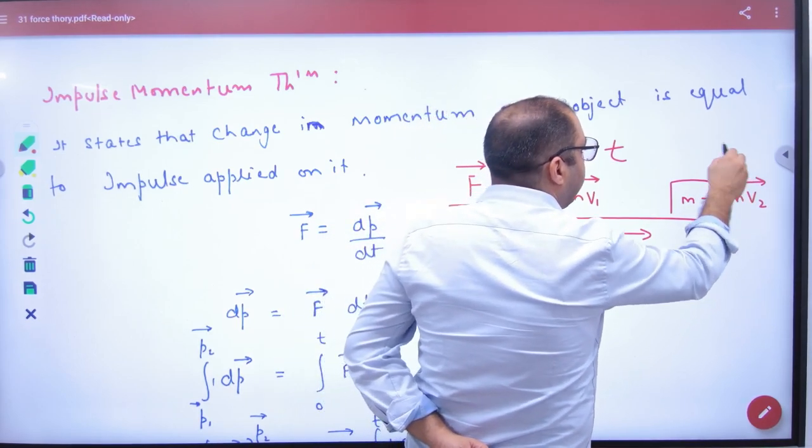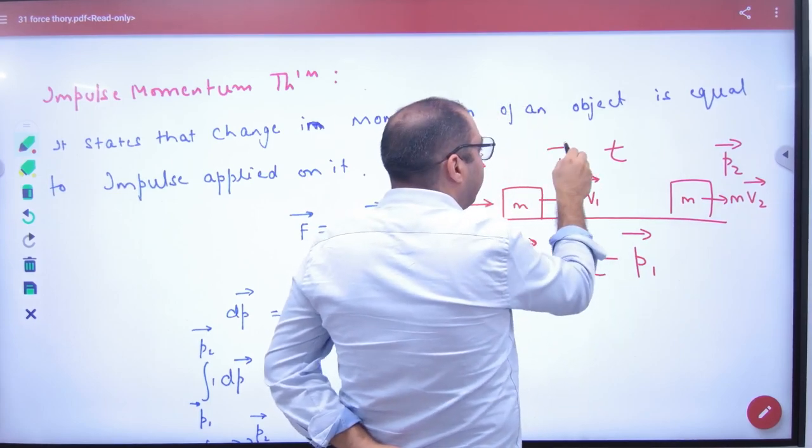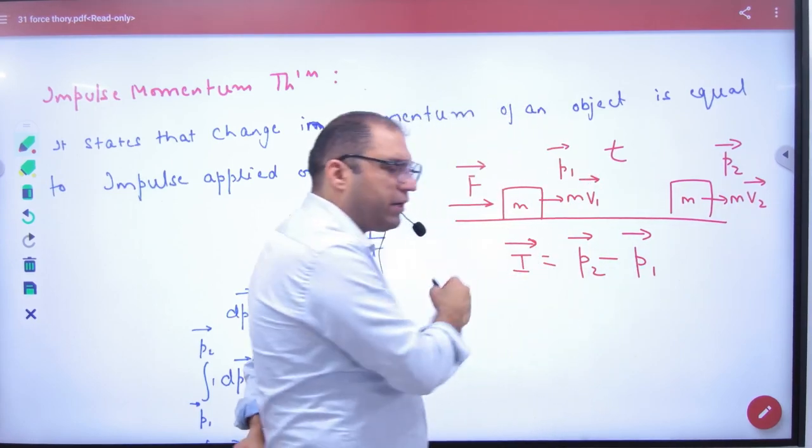What is change in momentum? What is P2 vector? What is P1 vector? What will be the momentum? What will be the impulse?